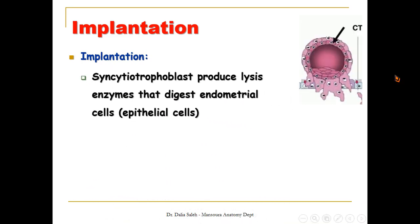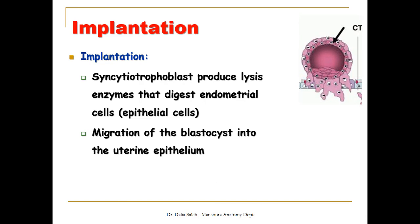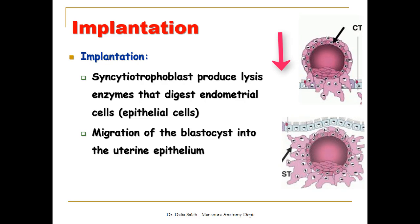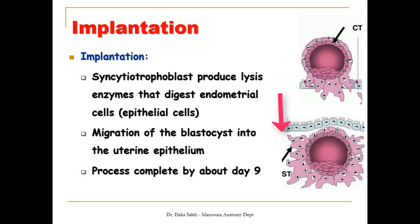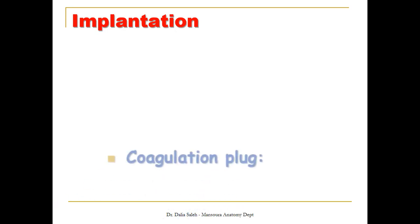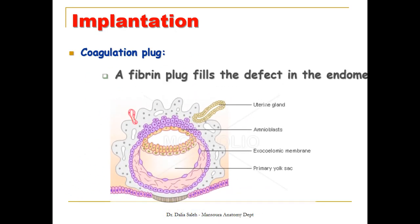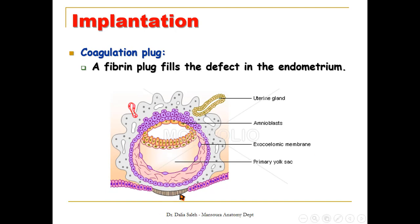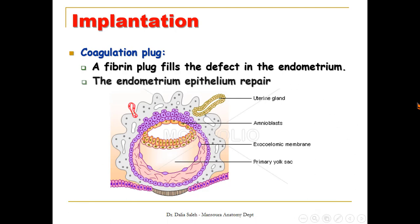Next, we have implantation. The syncytiotrophoblast, which looks like finger-like projections, produces lytic enzymes that digest the endometrial cells. When they open a space, the blastula migrates into the uterine epithelium. The process of implantation is complete by about day 9 of pregnancy. Finally, a coagulation plug forms — a fibrin plug that fills the defect in the endometrium where the syncytiotrophoblast opened a gap for the blastula to migrate inside. Later on, the endometrial cells grow and repair this defect.